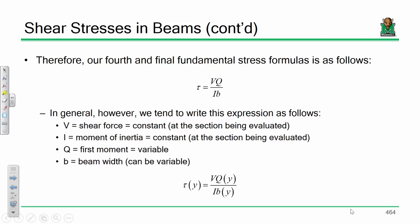Now, Q is what's called the first moment of area. Now, that's variable as you go up and down the beam, but the other one is the beam width.